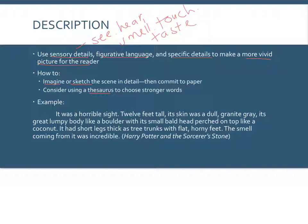Here is another example from Harry Potter — the troll scene where they find the troll in the girl's bathroom: 'It was a horrible sight. Twelve feet tall, its skin was a dull granite gray, its great lumpy body like a boulder with its small bald head perched on top like a coconut. It had short legs, thick as tree trunks, with flat, horny feet. The smell coming from it was incredible.' We've got sensory detail — what we see and smell — plus figurative language comparing it to a boulder and tree trunks, and very specific word choices throughout.